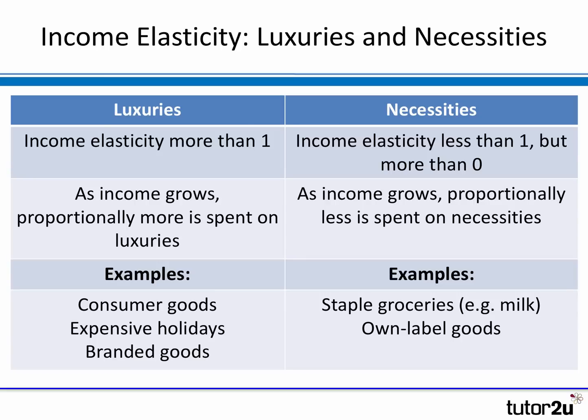Now, what does this mean? With income elasticity, we tend to make a distinction between what are known as luxury products and necessities. Luxury products are where the income elasticity is more than one — in other words, when incomes rise by a certain percentage, demand for these so-called luxuries rises by more than the change in incomes, so proportionately more of that income is spent on them. Conversely, where income elasticity is less than one but more than zero, as income grows, demand rises but not by as much as the percentage change in income — so proportionately less is spent on necessities.